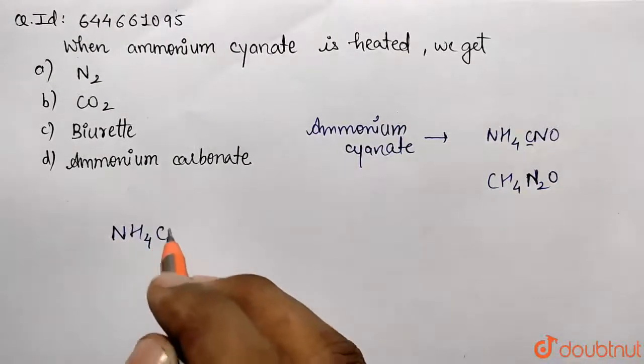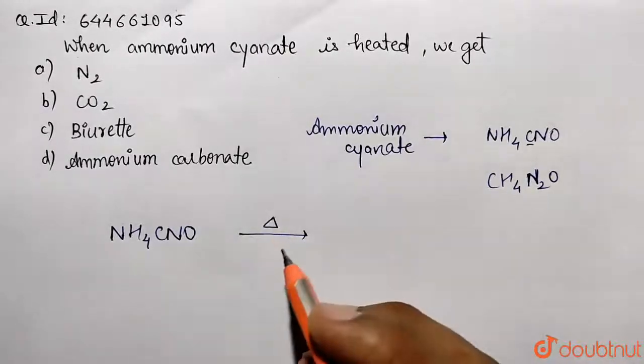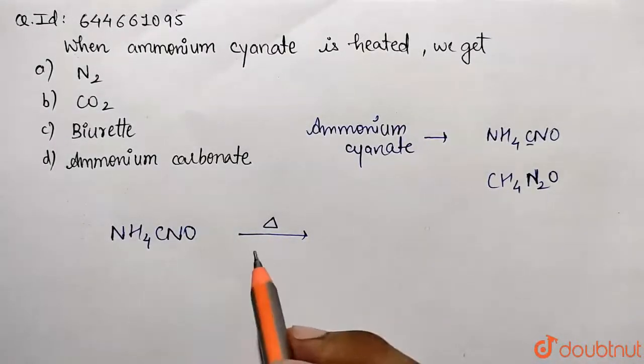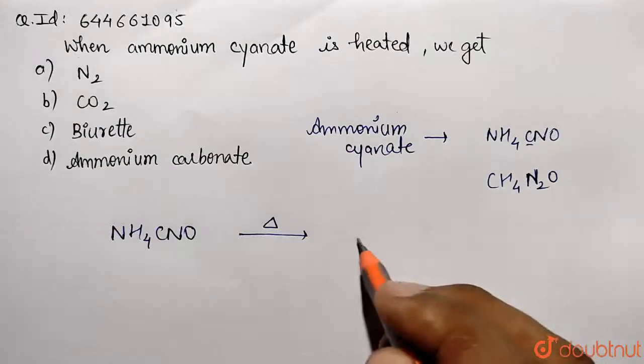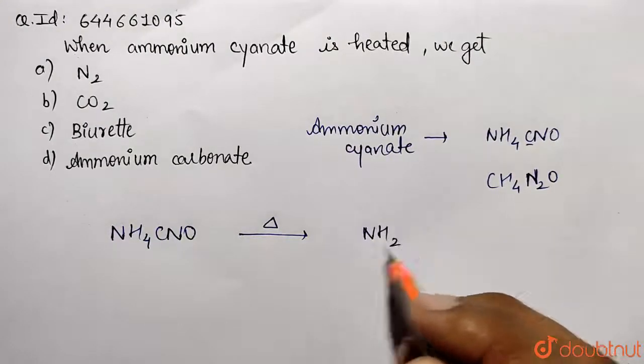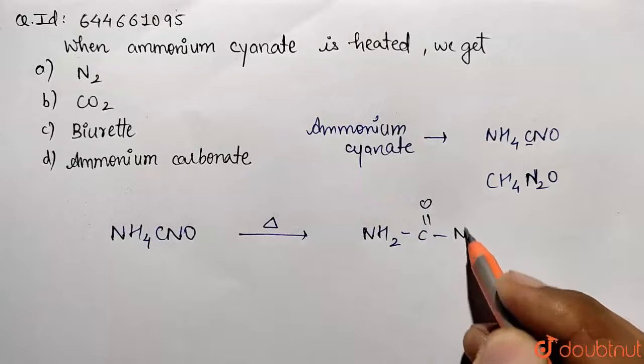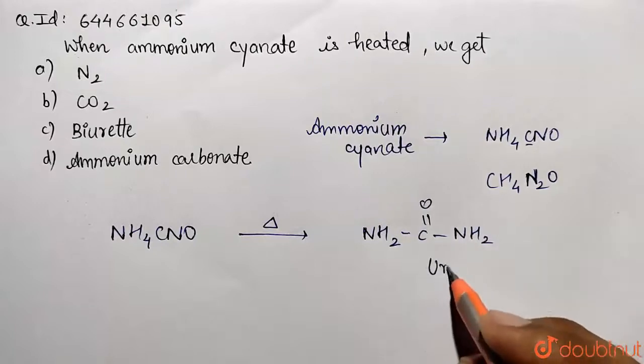The formation of urea is going to take place. So this is NH2-C=O-NH2. This is called urea.